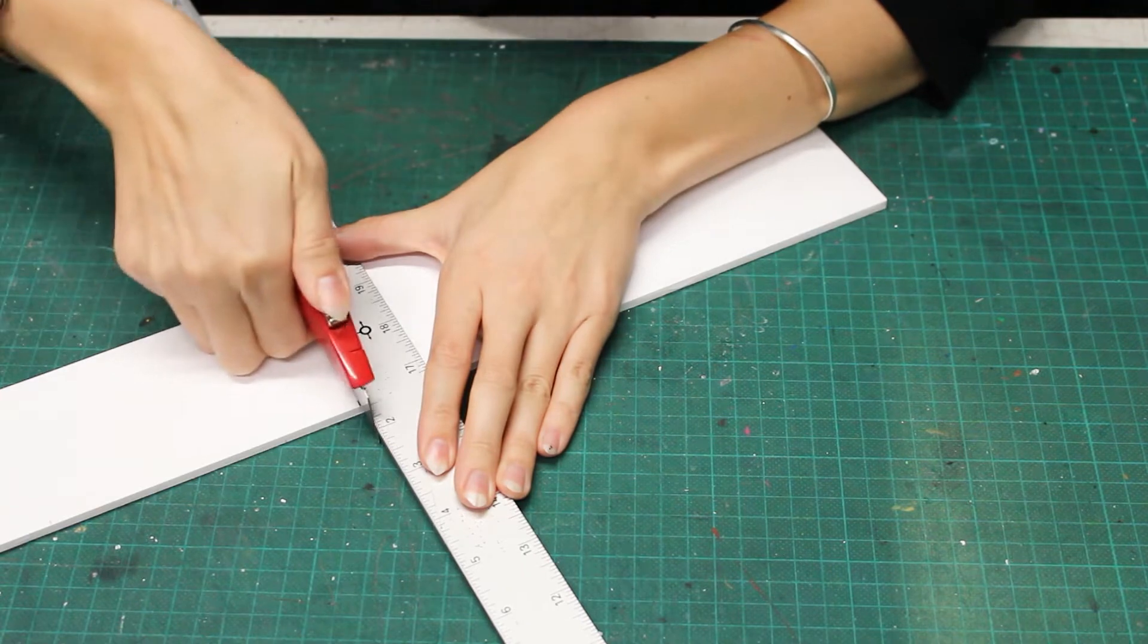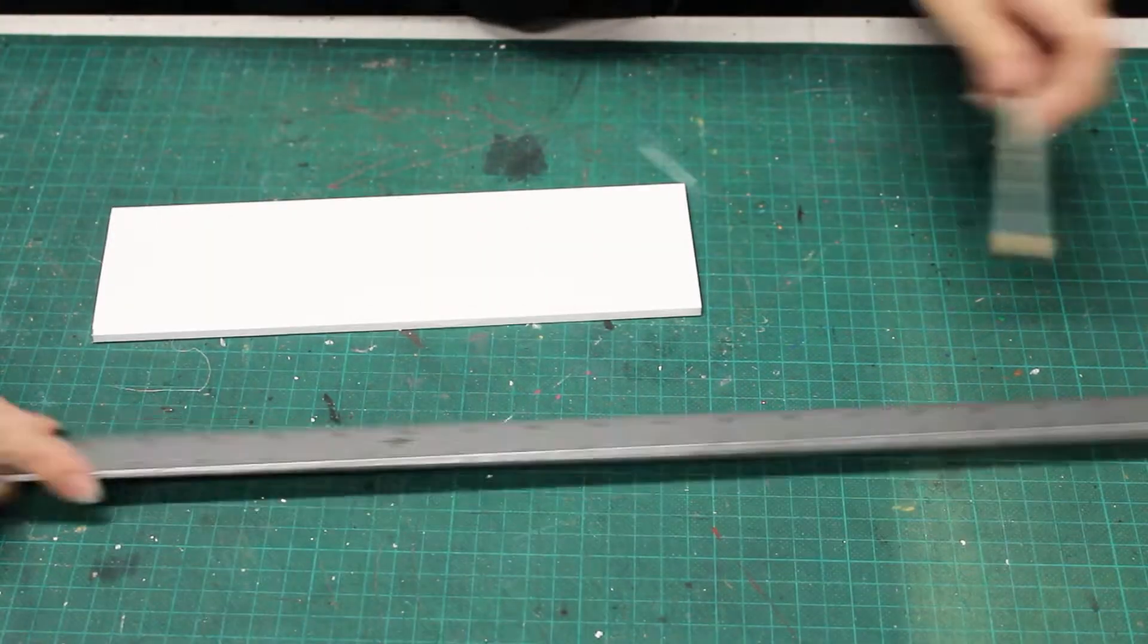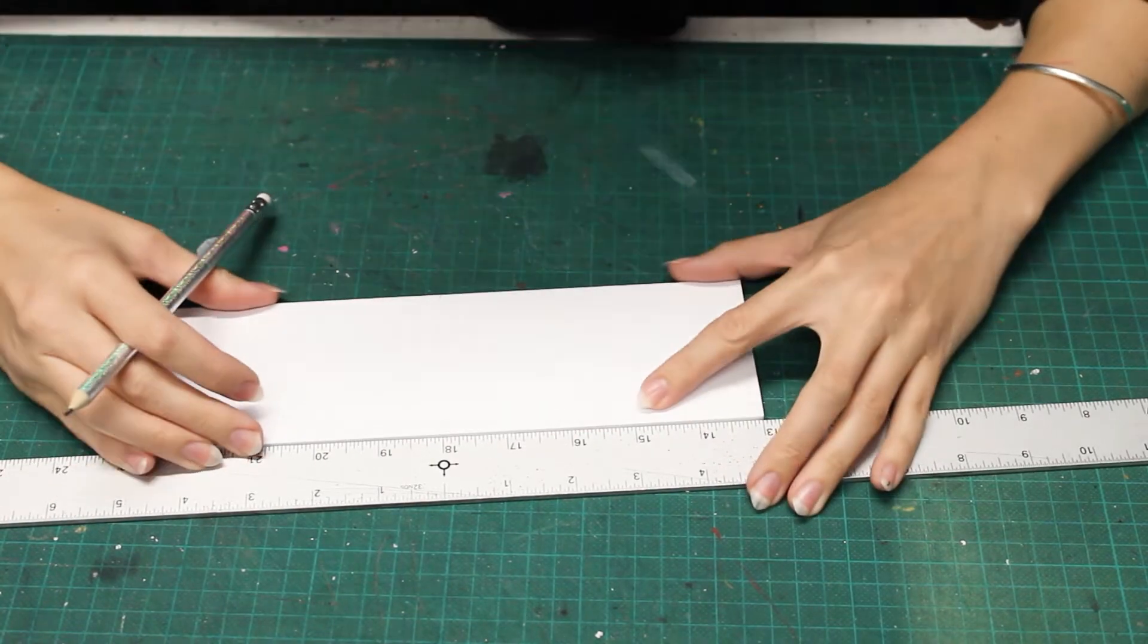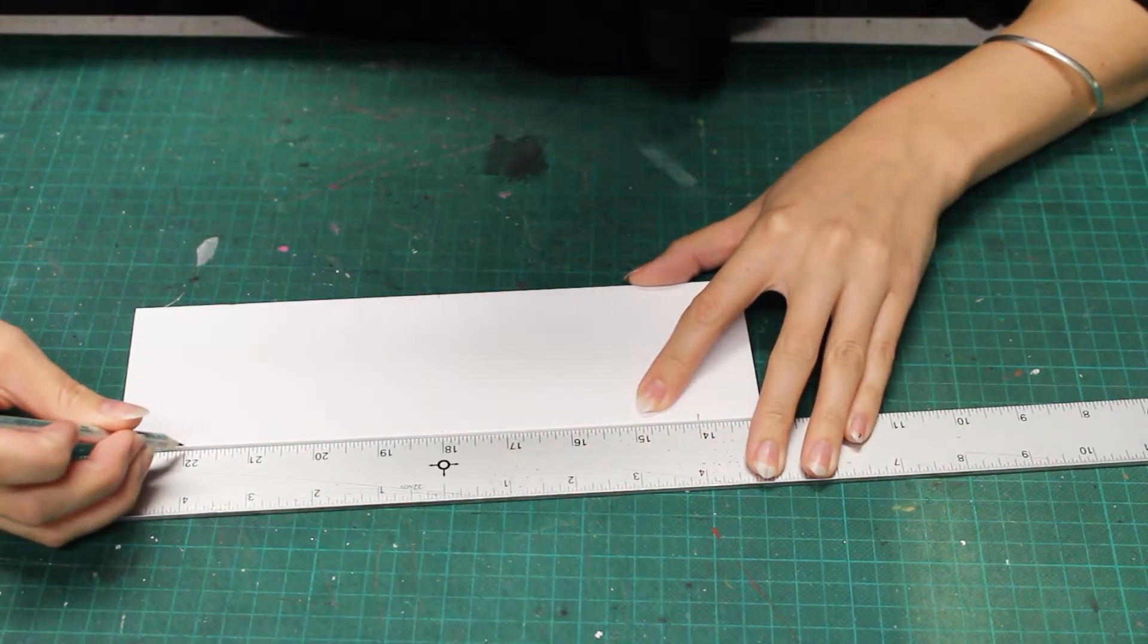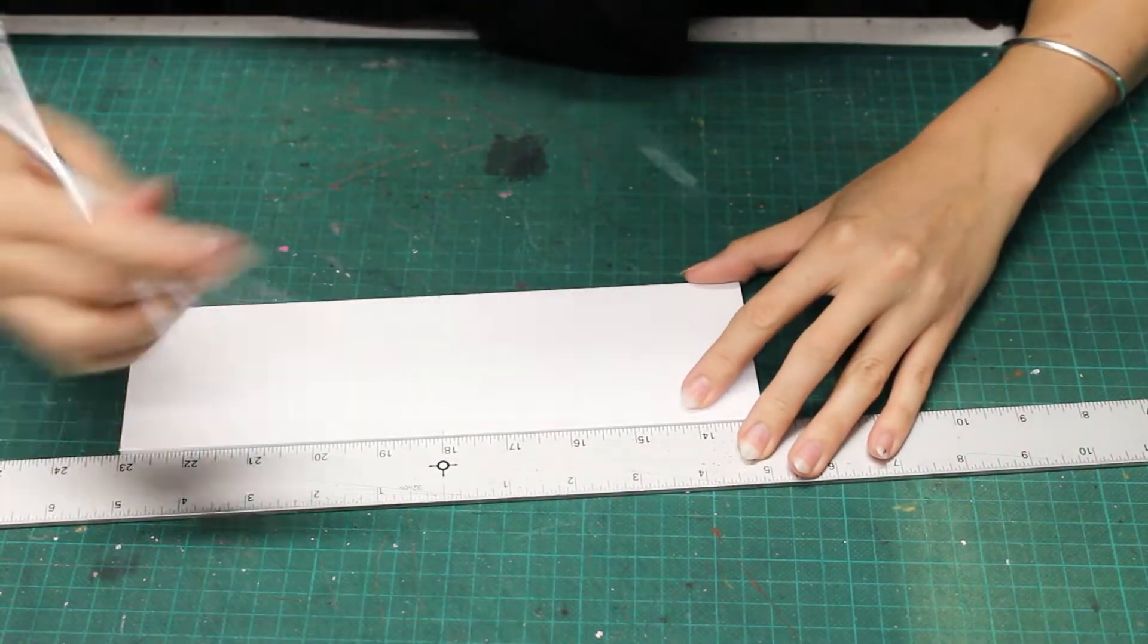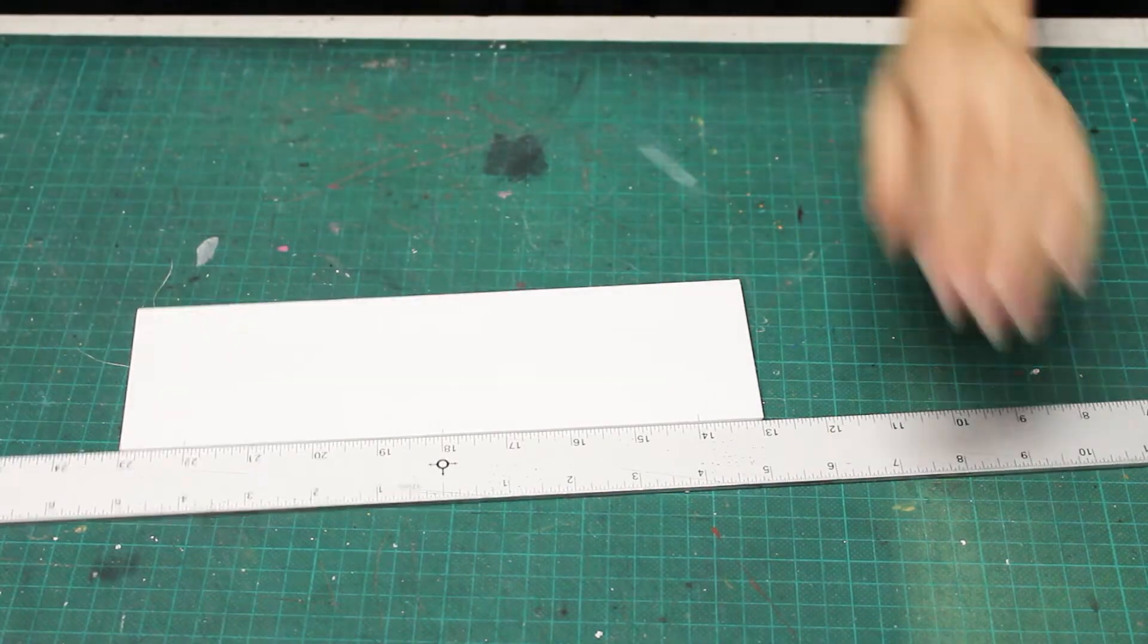First, I'll cut 10 inch long strips. Then I'll measure and mark the top portions and cut away the excess.